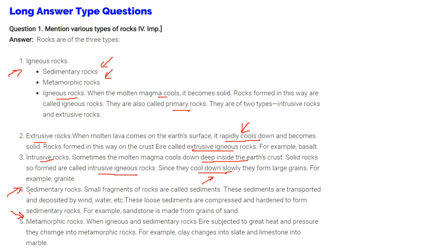Then we have sedimentary rock, second category of rock. Small fragments of rocks, these are called sediments. These sediments are transported and deposited by wind and water. So these loose sediments are compressed and hardened to form sedimentary rock. For instance, sandstone is made from grains of sand.